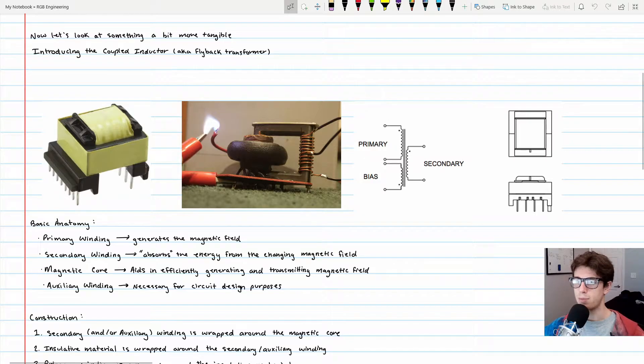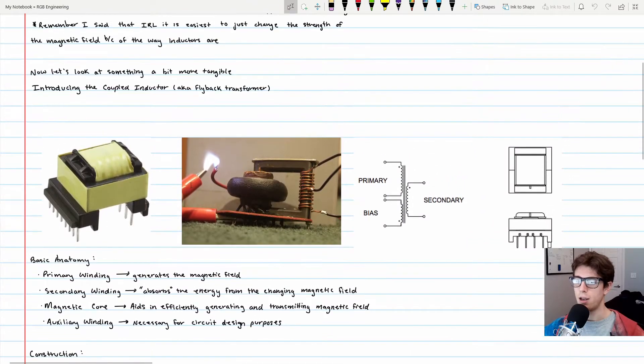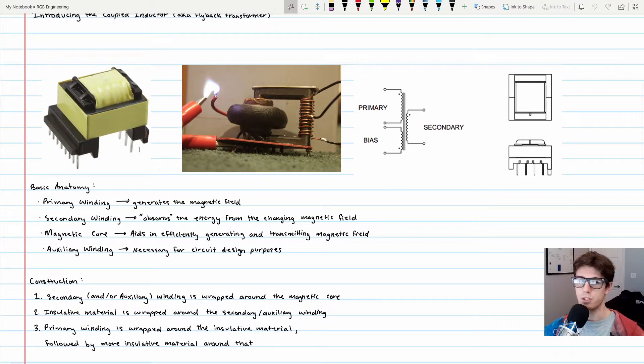The magnetic core is utilized for efficiency purposes. In this picture, the square circle-shaped thing is the core. In the left picture you can't see it because it's covered up. It's usually a piece of iron material. It helps with efficiency in generating and transmitting the magnetic field. You'll pick different cores for different reasons, but the core is just scaffolding for which you can wrap the wires around.